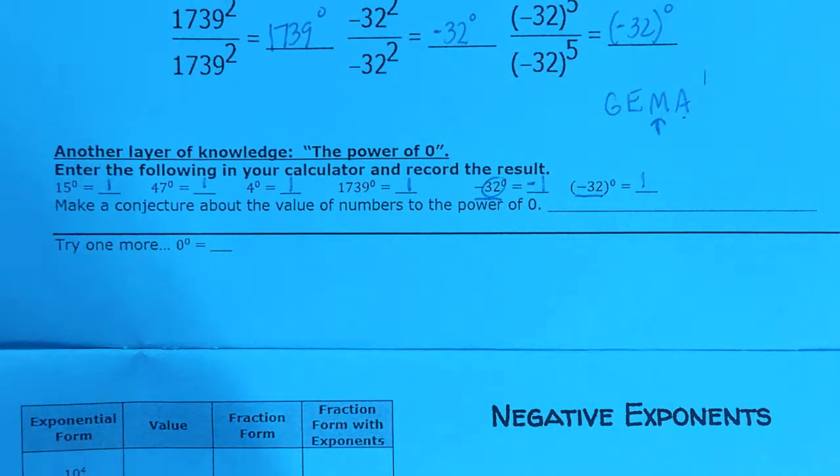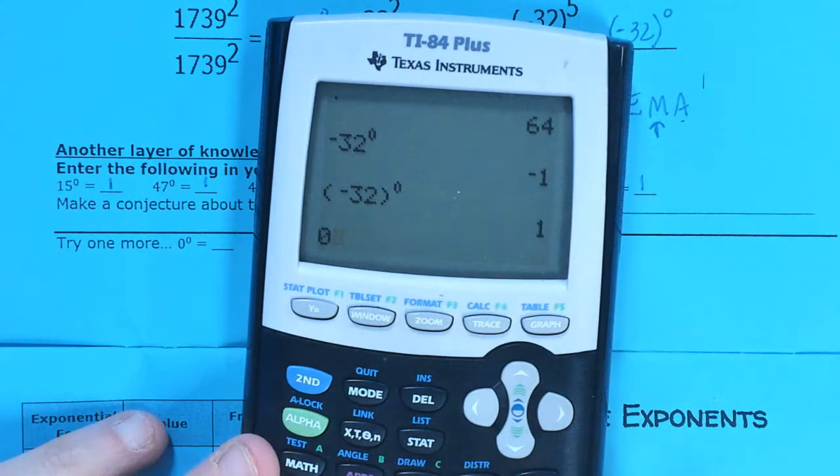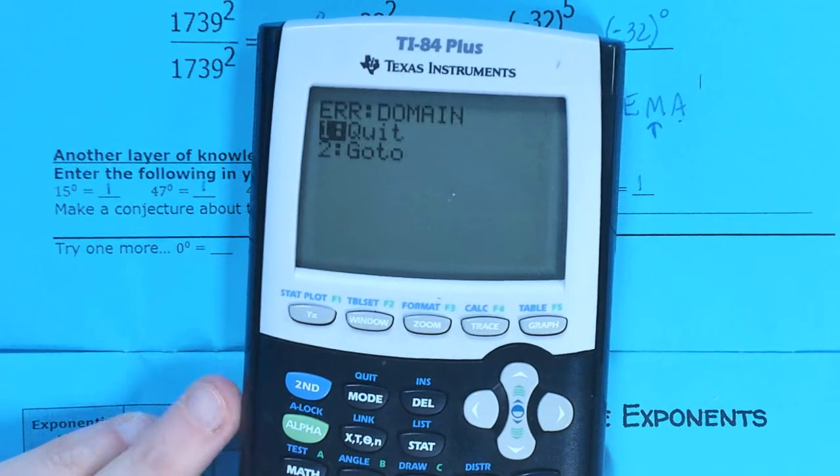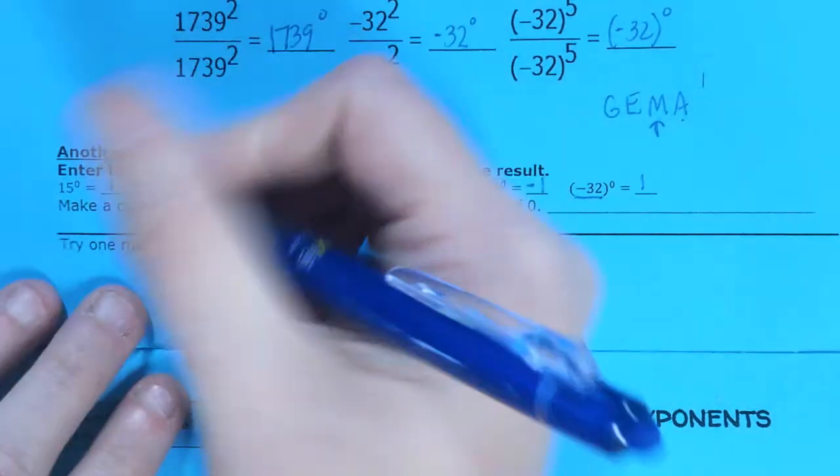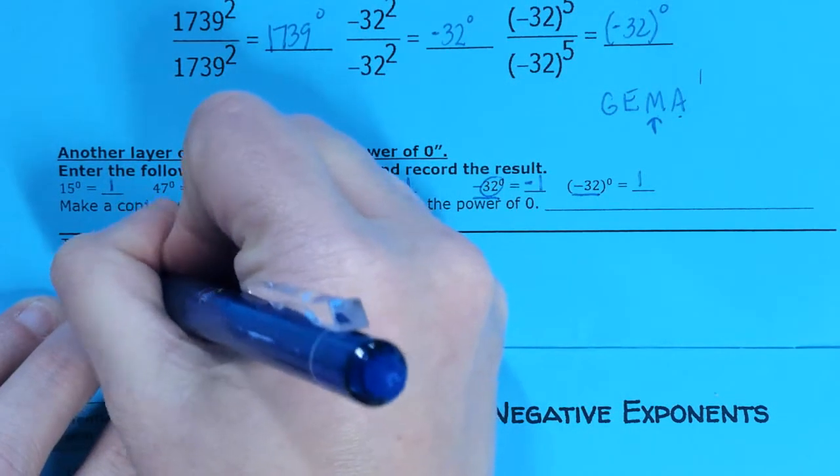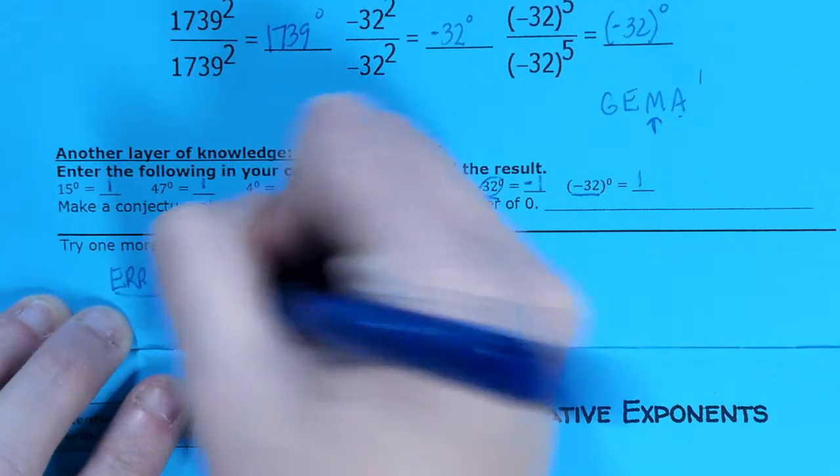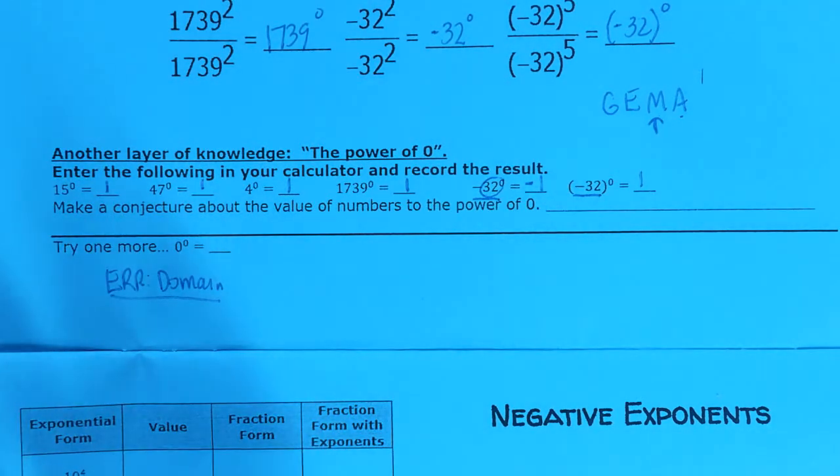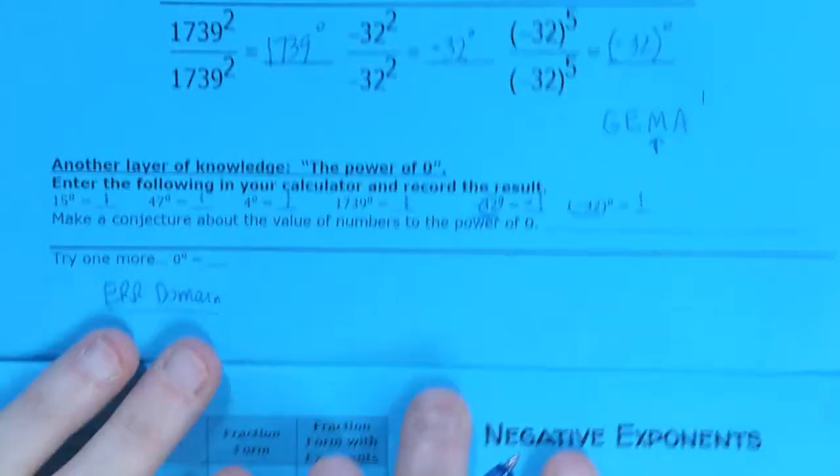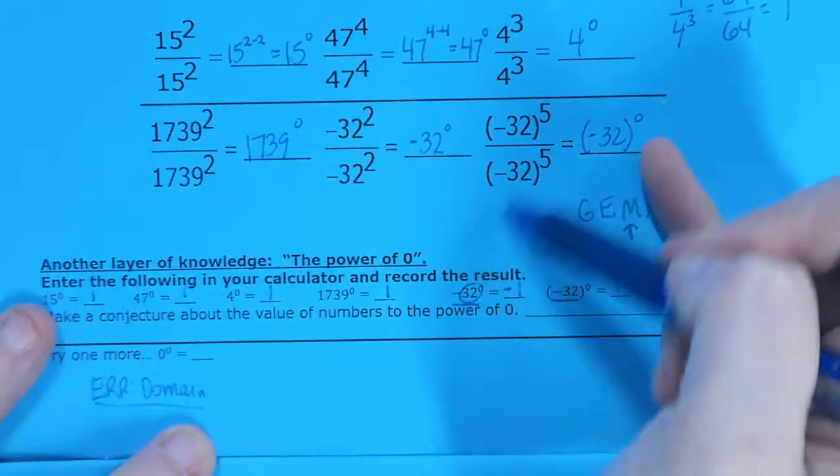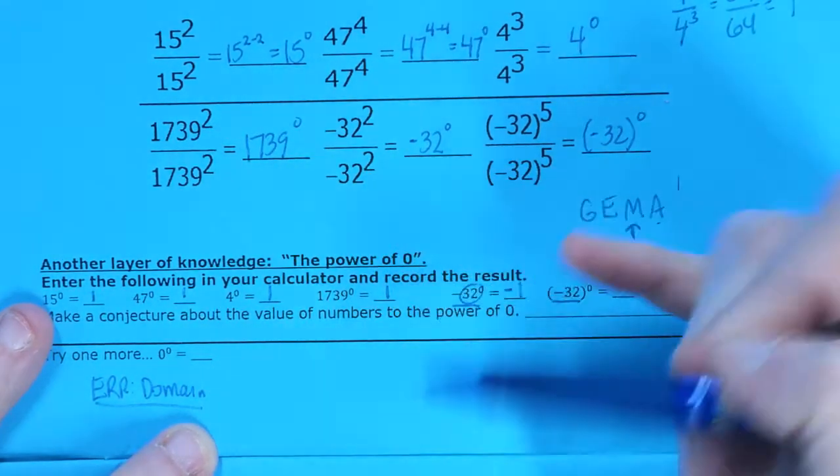Now let's try this one real quick. 0 to the 0 power. So let's put this in our calculator. 0 to the 0 power. And when we do that, we get error domain. Let's write that down. Error domain. So why is this happening? To talk you through this, I'm going to work our way backwards to one of these problems with our 0 to the 0 power.